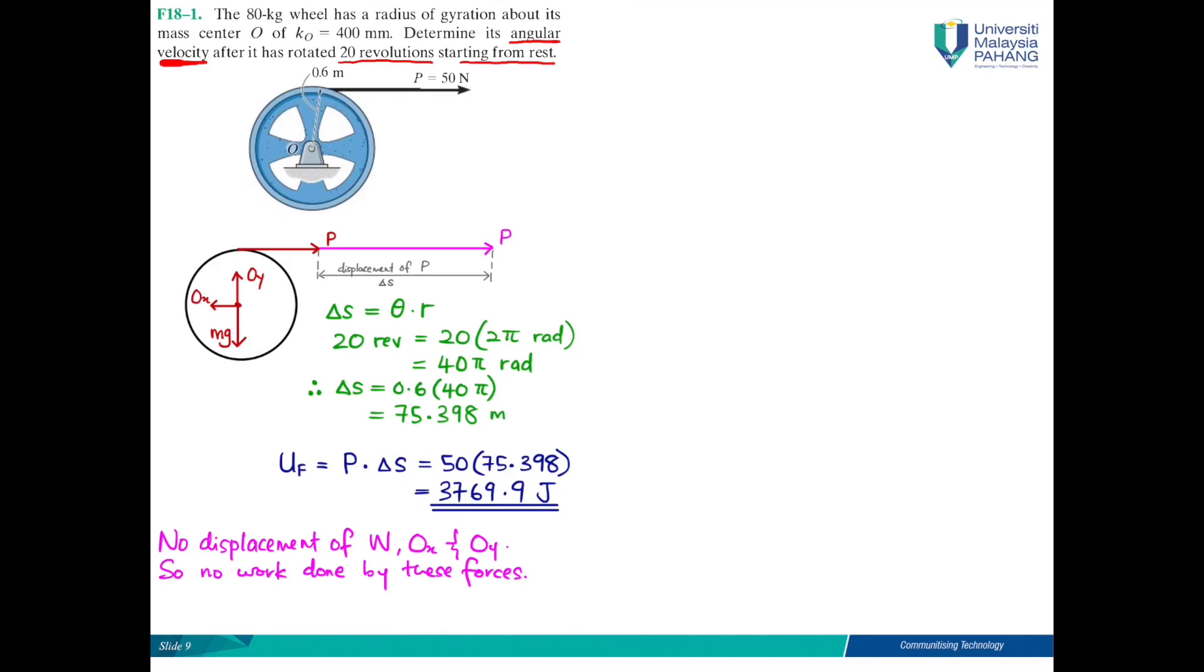After 20 revolutions, point P is traveling at a certain distance of delta s, and 20 revolutions is equivalent to 40π radians. Therefore delta s is actually equal to 75.398 meters using the sector formula.